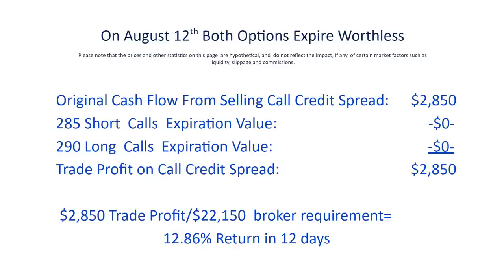Moving forward to the day that these options expired, the DIA closed at around 279 that day later in August. Even though the DIA had actually risen slightly since we first put this trade on 12 days earlier, both options — the short calls at 285 and the long calls at 290 — both expired worthless. No one's going to exercise his right to buy DIA shares at 285 when they're trading at 279 in the open market. So we're left with the original $2,850 that we received, for a profit of over 12% in 12 days.